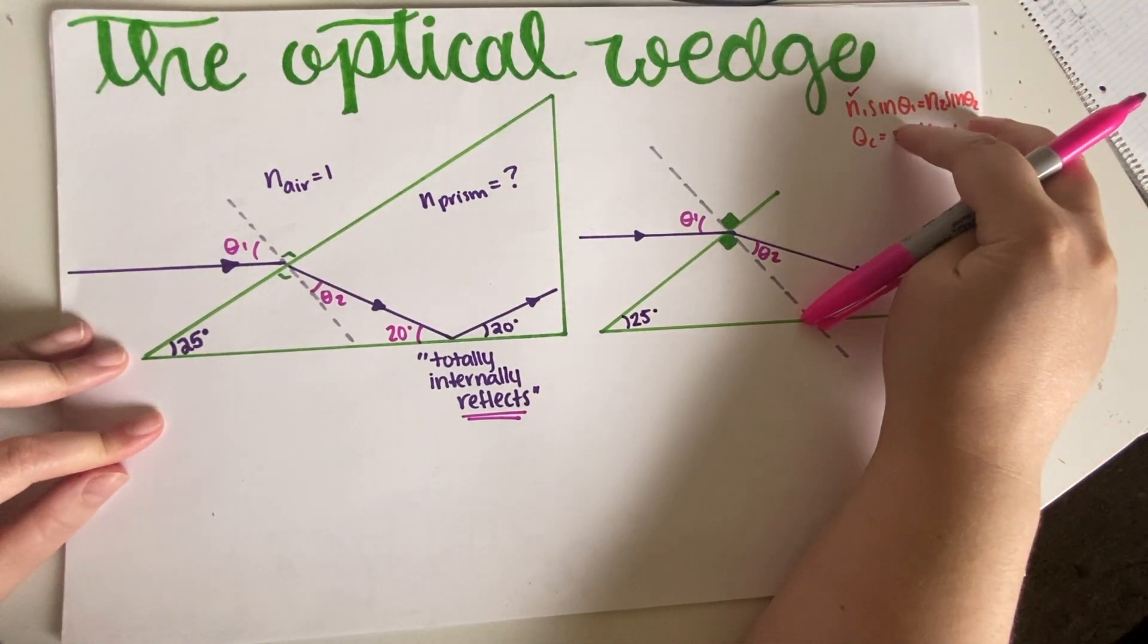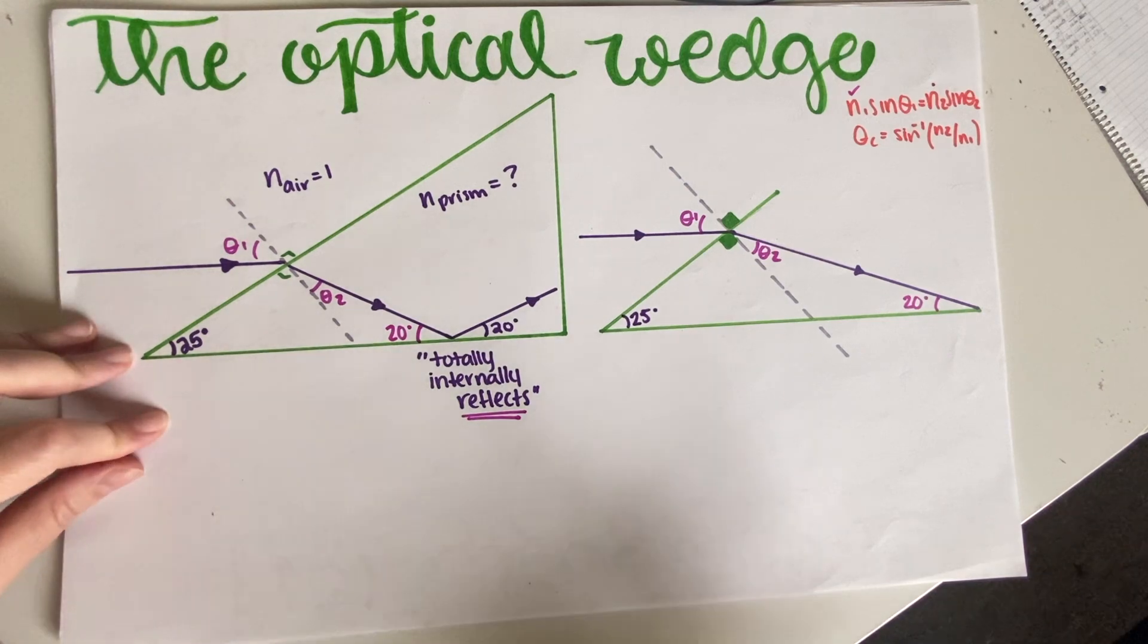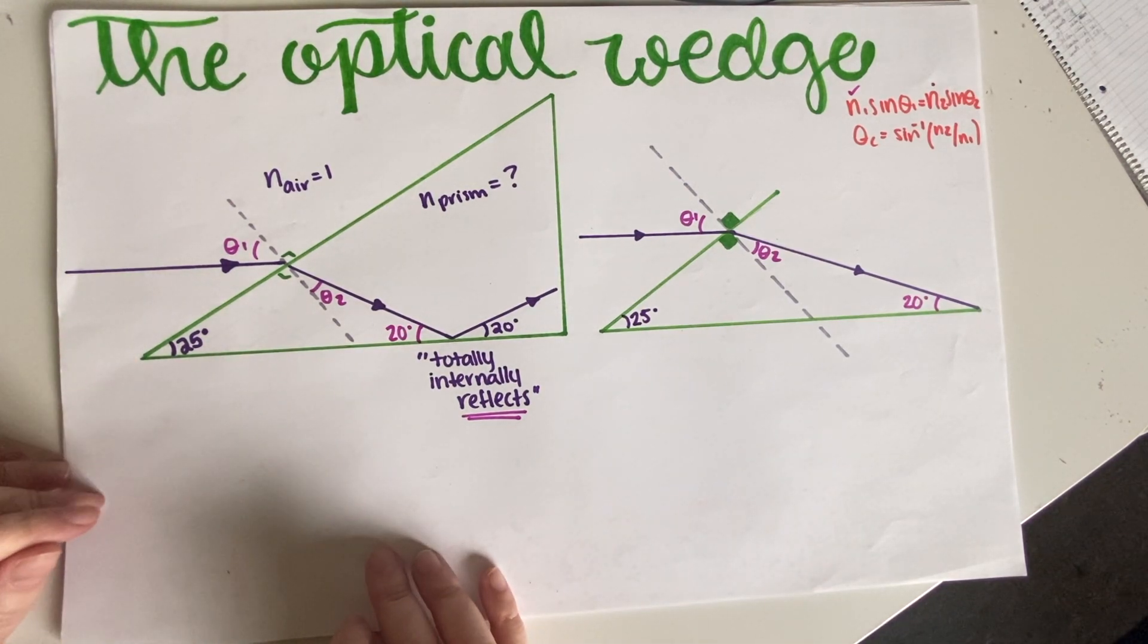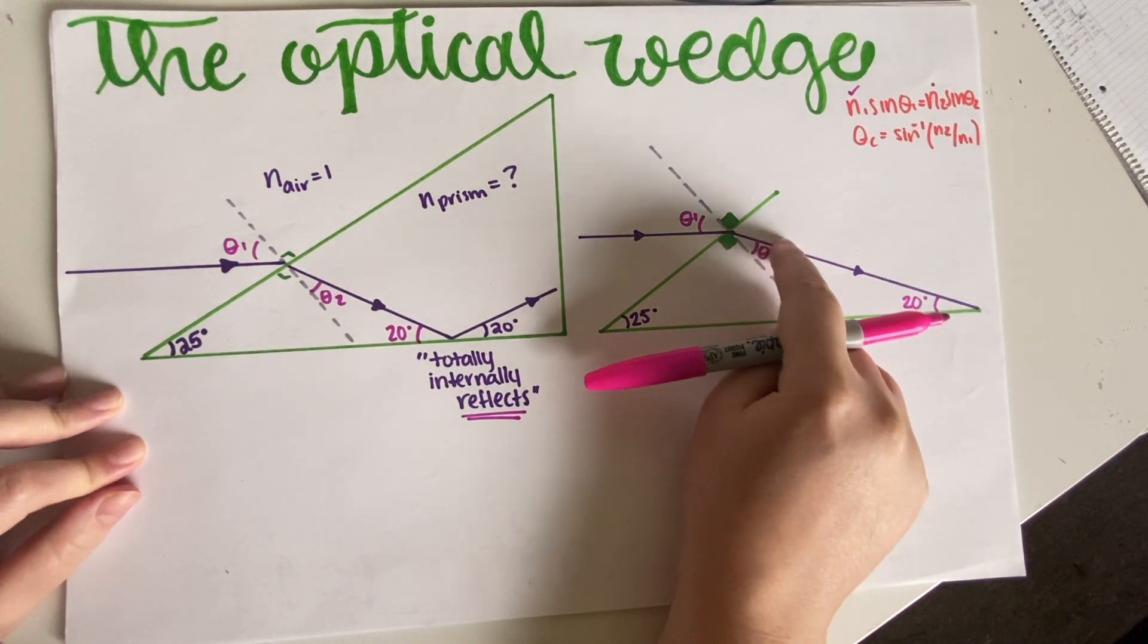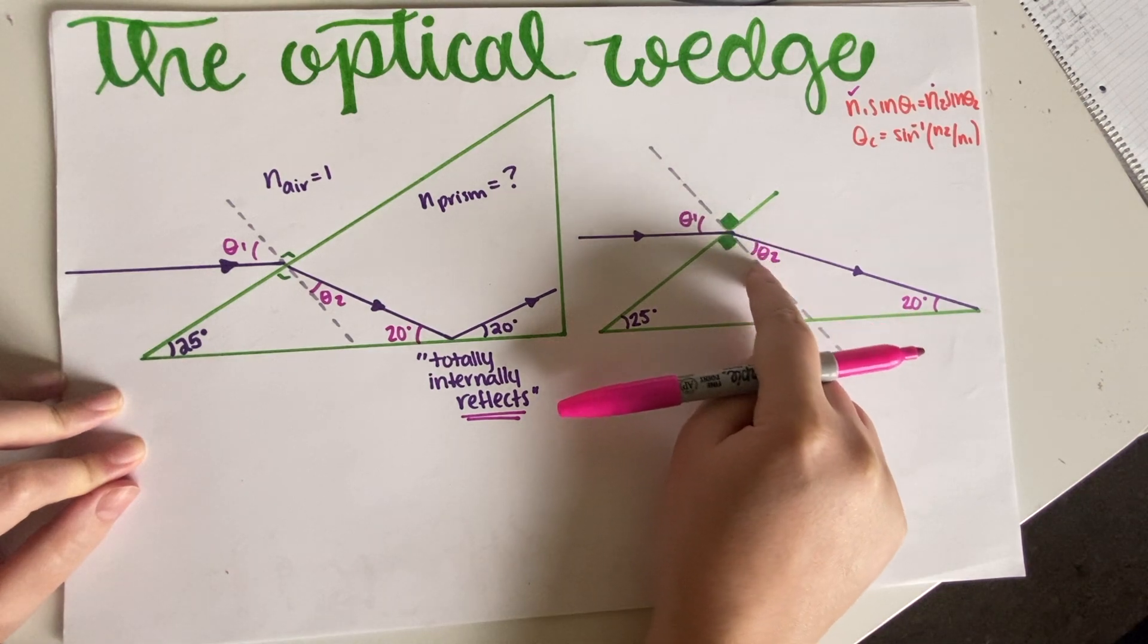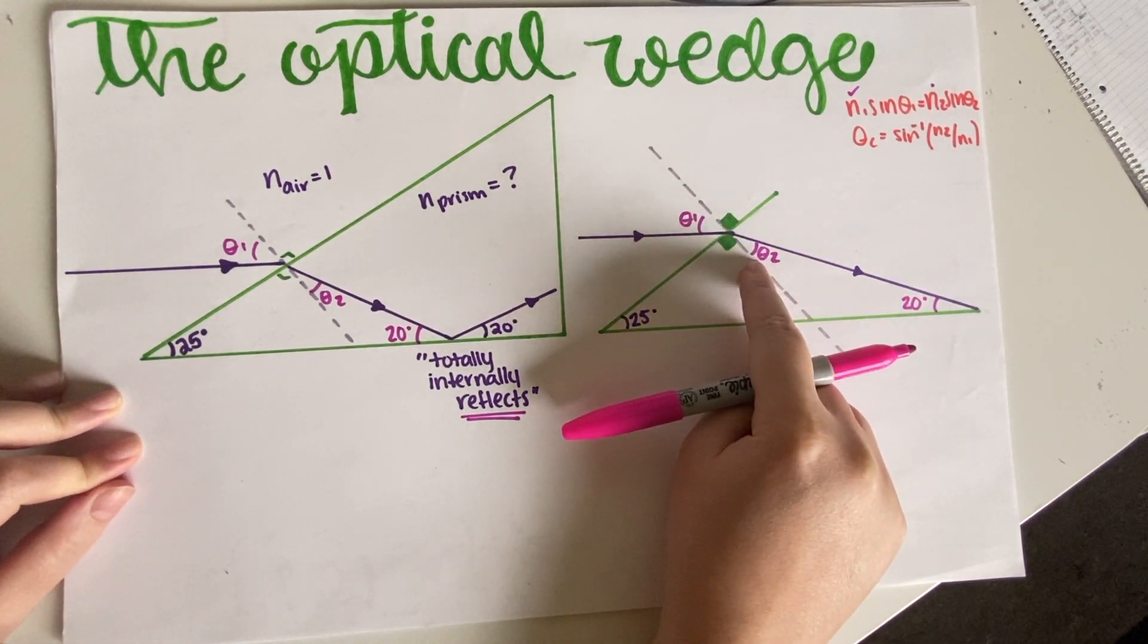So now basically we have to figure out what these two angles are so we can use our equation, because we already have n1. So if we find the angles, we can easily go for n2, which is what we actually have to find.